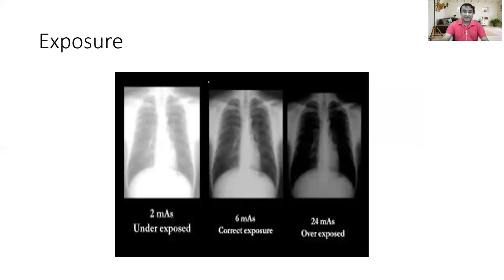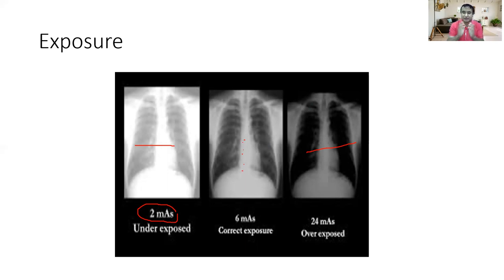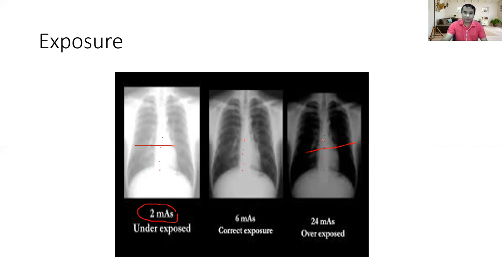The fourth thing to check is exposure. If you give too low an amount of current, you will see increased opacity. If you give too high an amount, you see abnormal radiolucency. To assess correct exposure, look at the vertebrae just behind the cardiac shadow. If you can see the vertebrae only faintly, it is correct exposure. If you cannot see the vertebrae at all, it is underexposed. If you see the vertebrae clearly, it is overexposed. In overexposed films, lung fields are hyperlucent; in underexposed films, lung fields are radio-opaque.